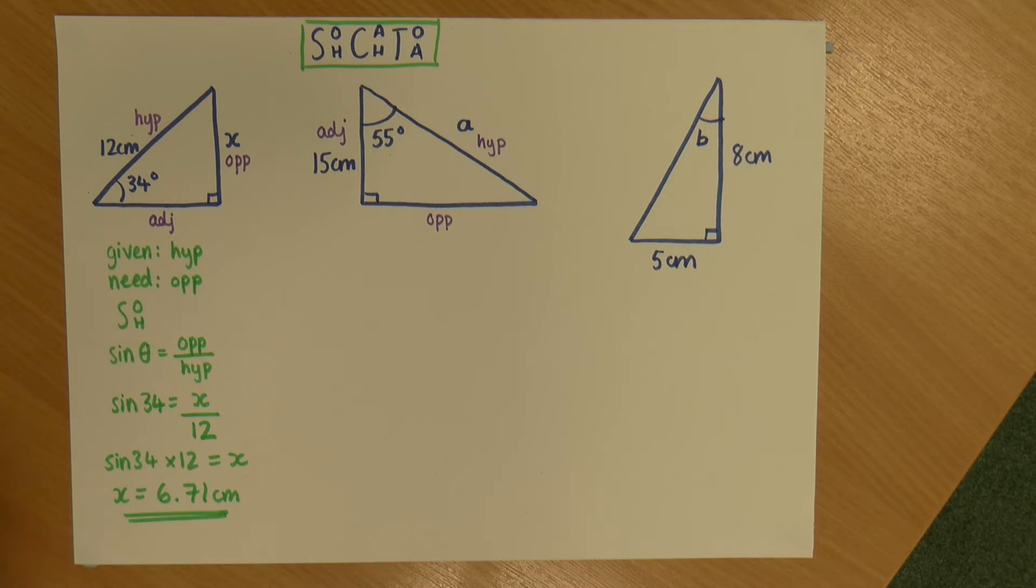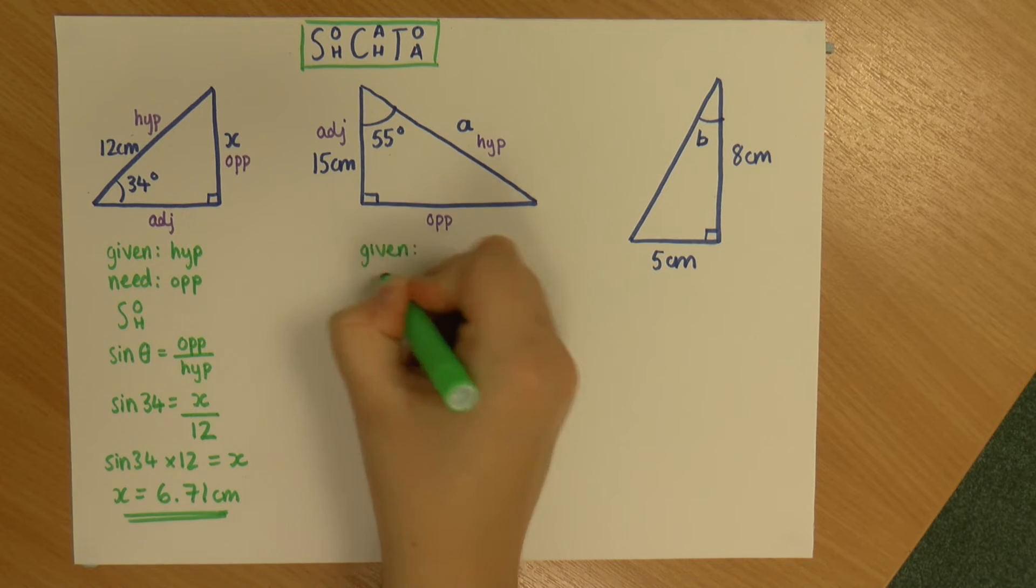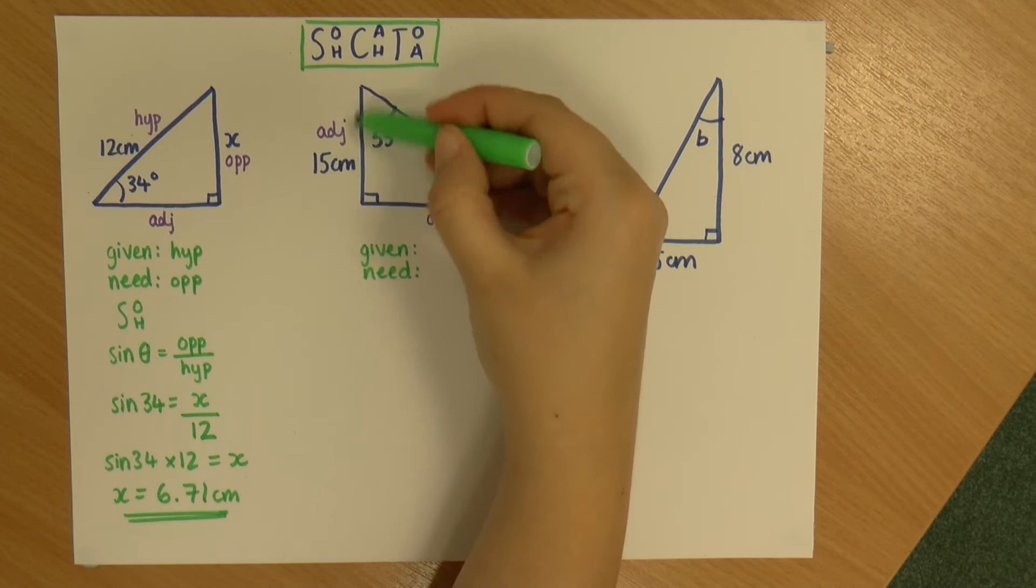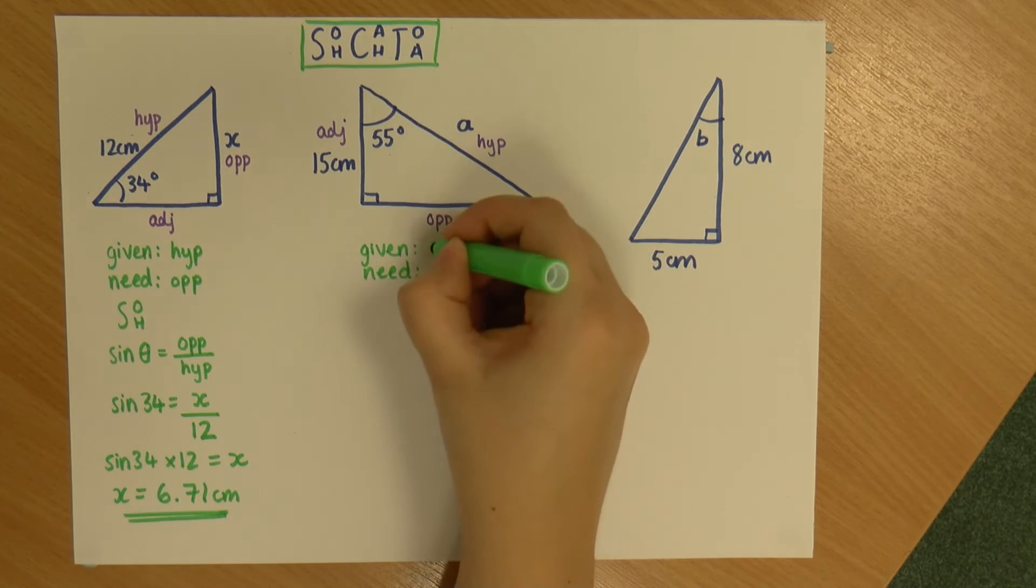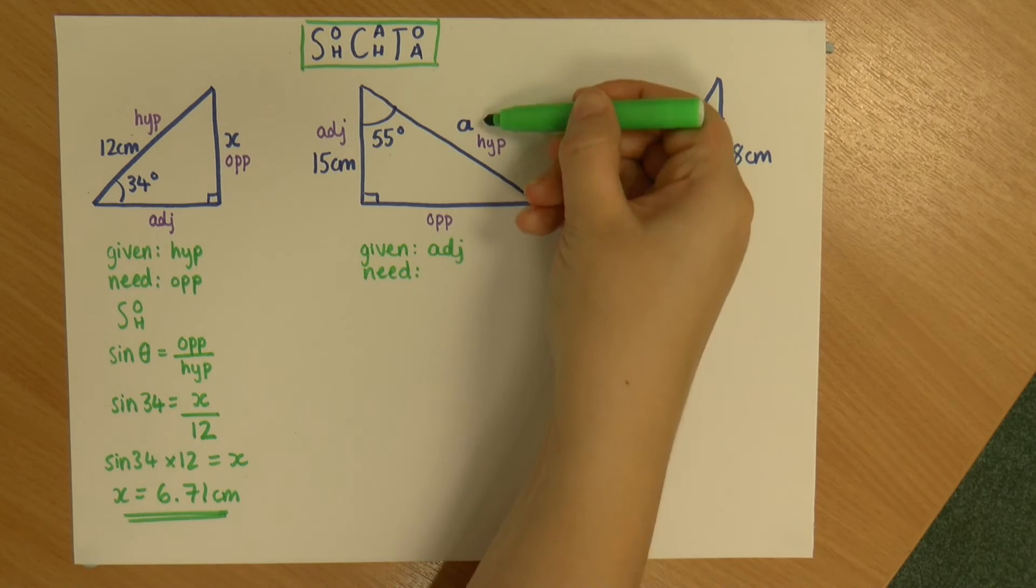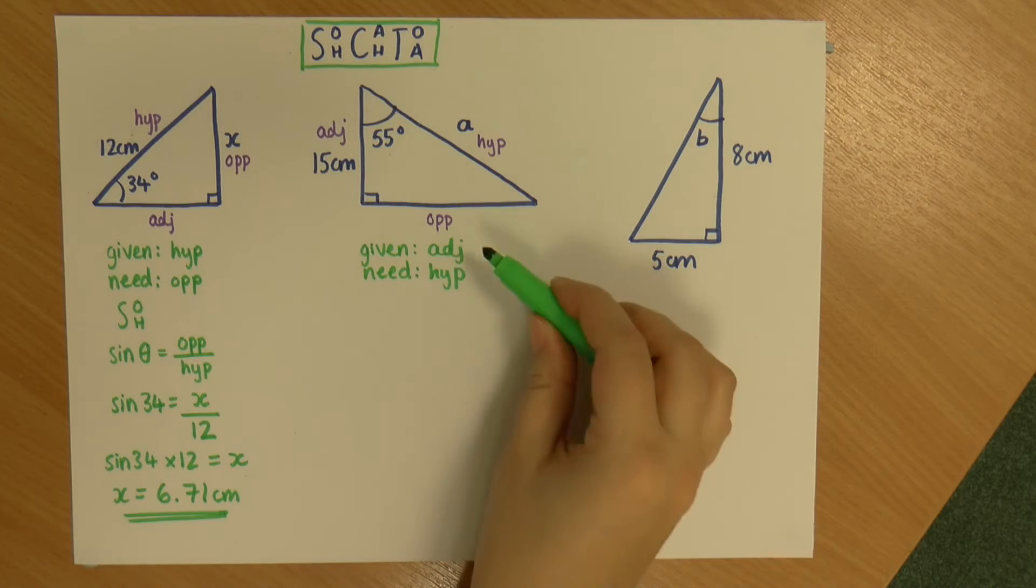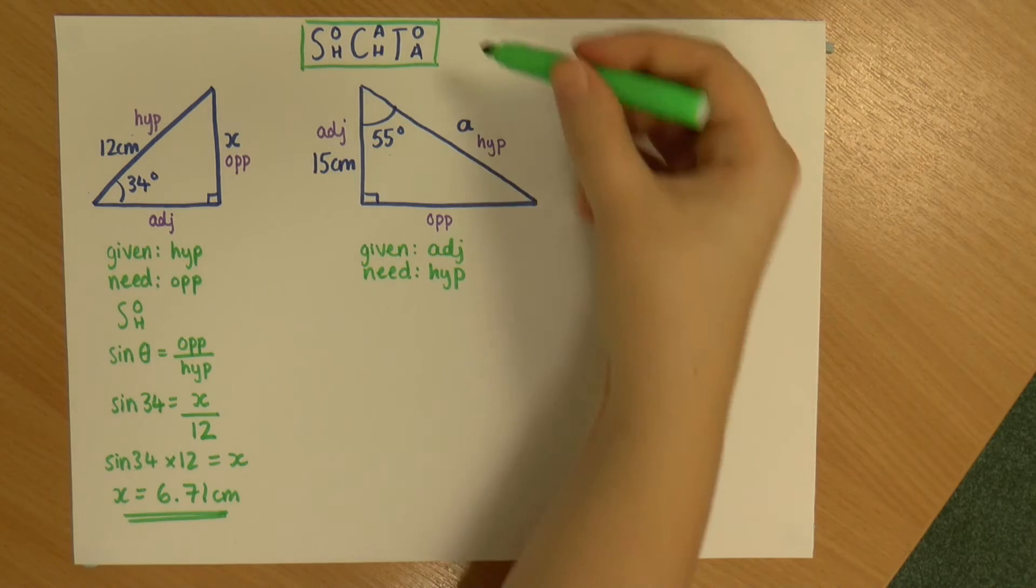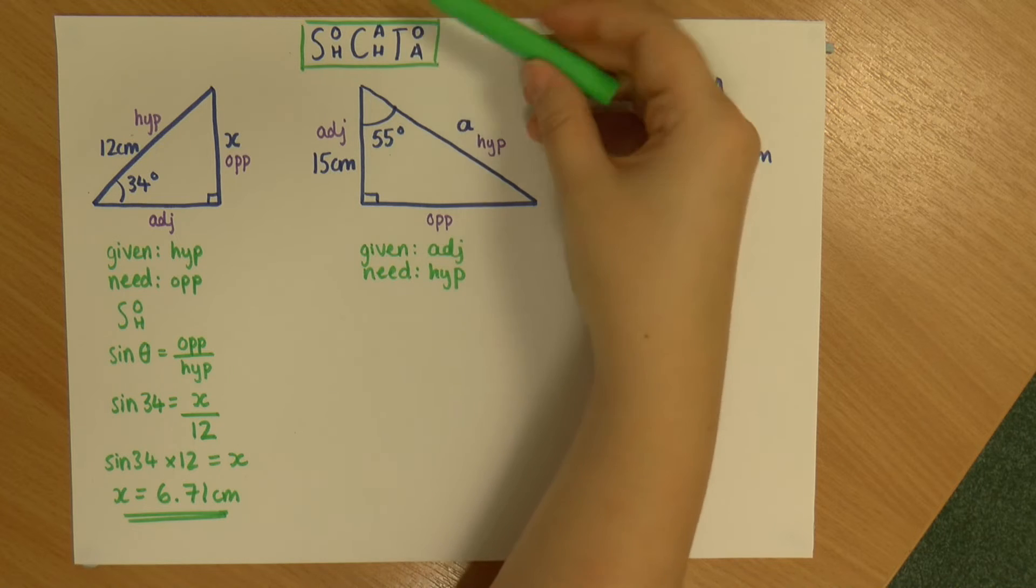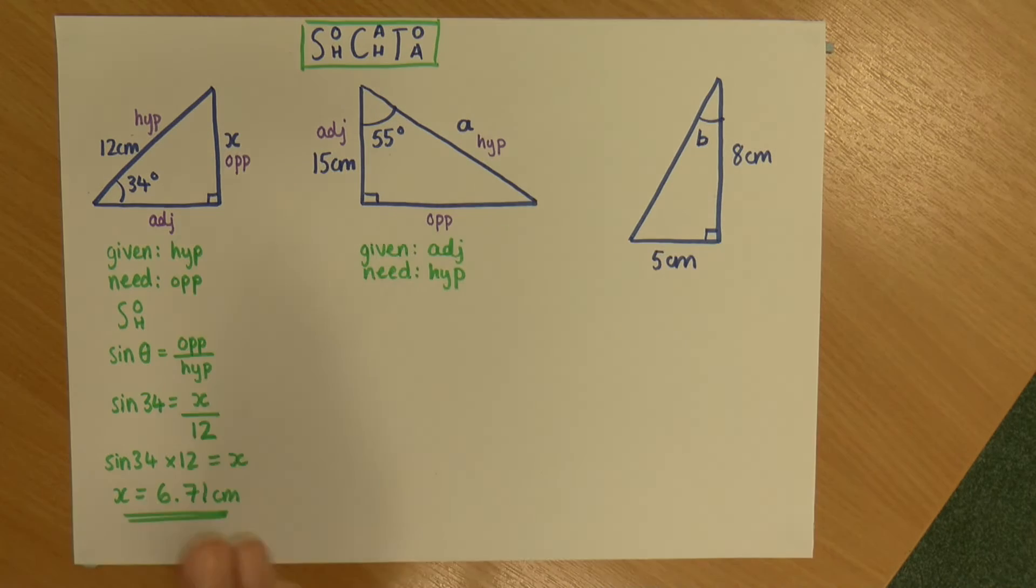So again, let's see what we've been given and what we need. So we have been given this side, which is the adjacent. And we need side A, which is the hypotenuse. So A and H, we're looking which one of these contains them. So it's the middle one, cos. Cos contains A and H in its formula. None of the other do.